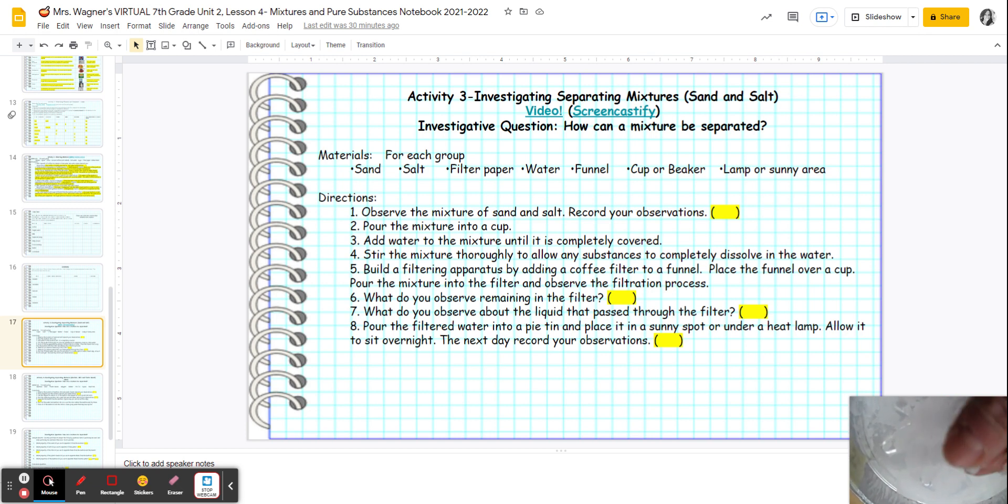Water evaporated. So this is separating the sand, salt, water mixture by a physical means. We were able to filter out the sand and then we were able to evaporate the water so the salt was left in the pan.